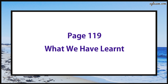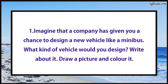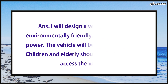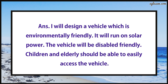Turn to page number 119 — Let's discuss what we have learned. Question number one says: Imagine that a company has given you a chance to design a new vehicle like a minibus. What kind of vehicle would you design? Write about it and draw a picture and color it. Answer: I will design a vehicle which is environmentally friendly and runs on solar power. The vehicle will be disabled-friendly — children and elderly should be able to easily access it.